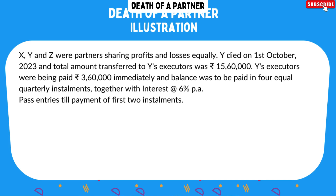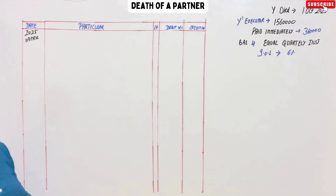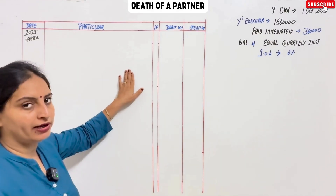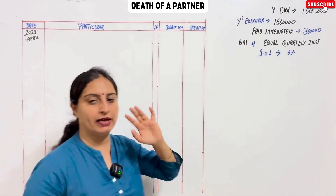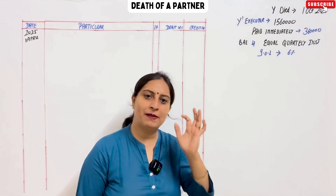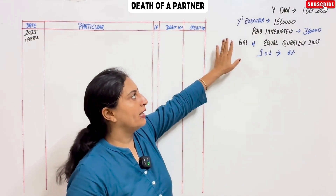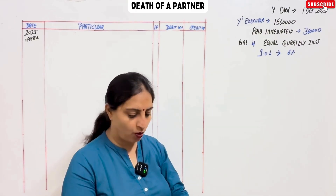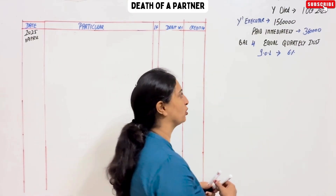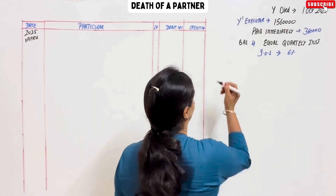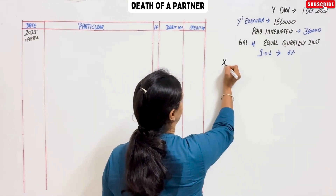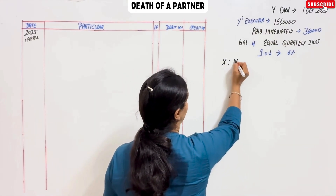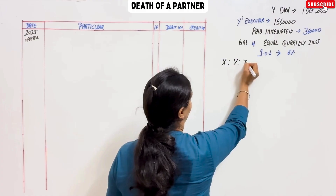We need to pass entries till payment of the 1st two installments. First of all, we have to pass the journal entries. When X, Y and Z were three partners, we will make it like this — X, Y, and Z.